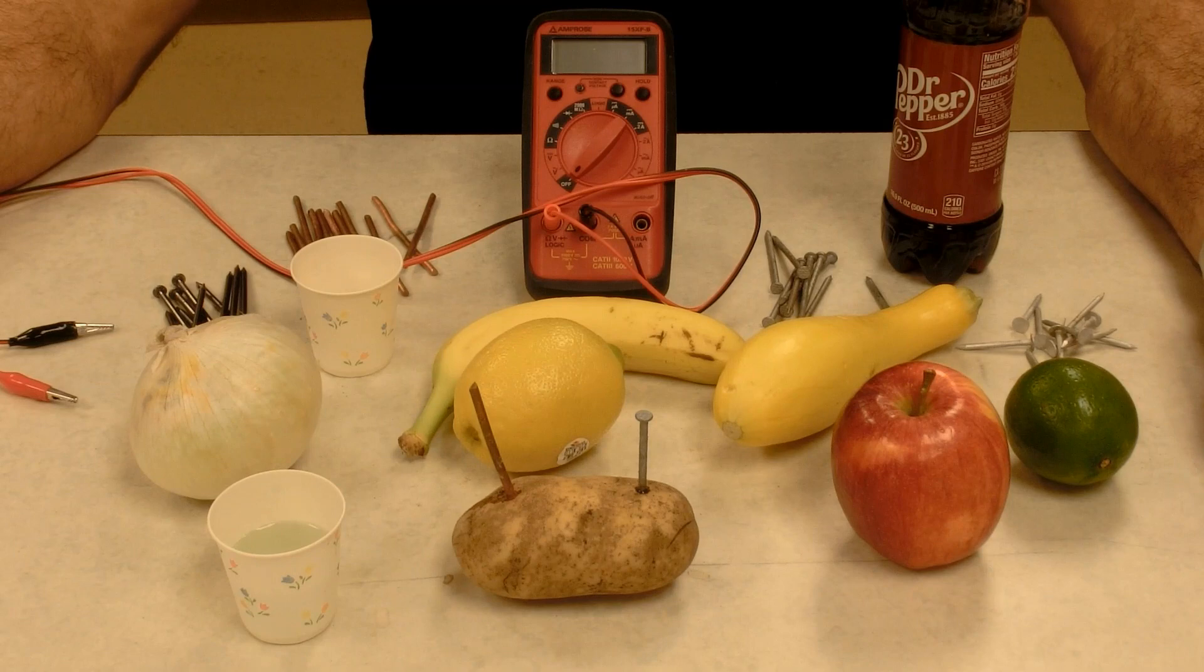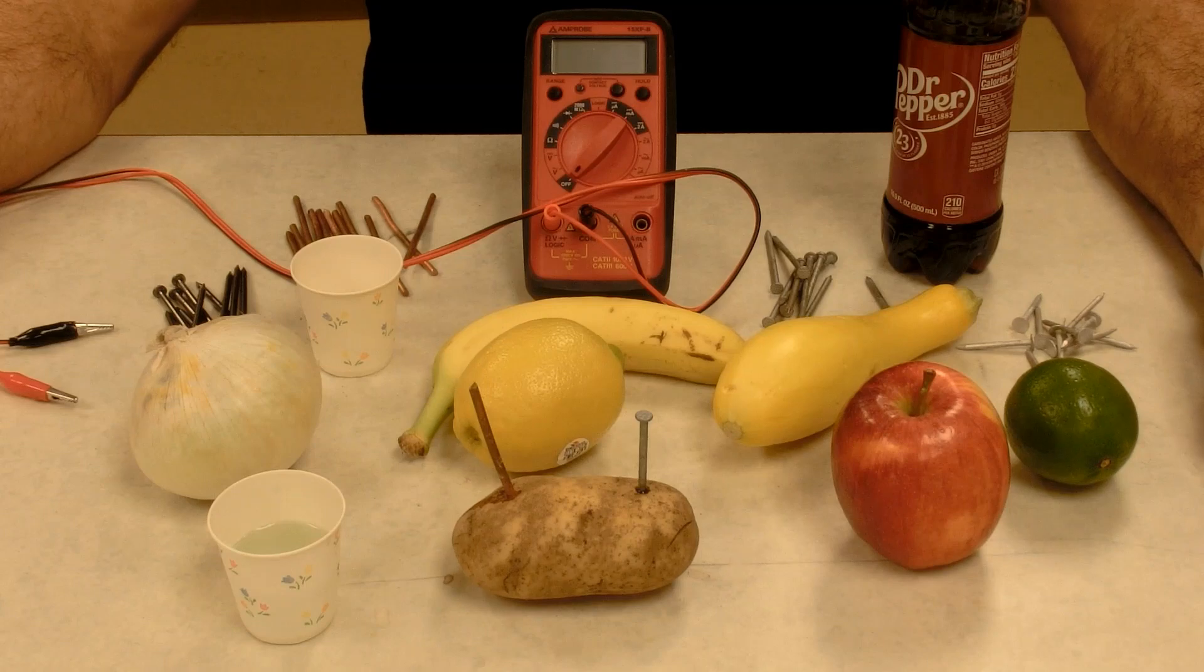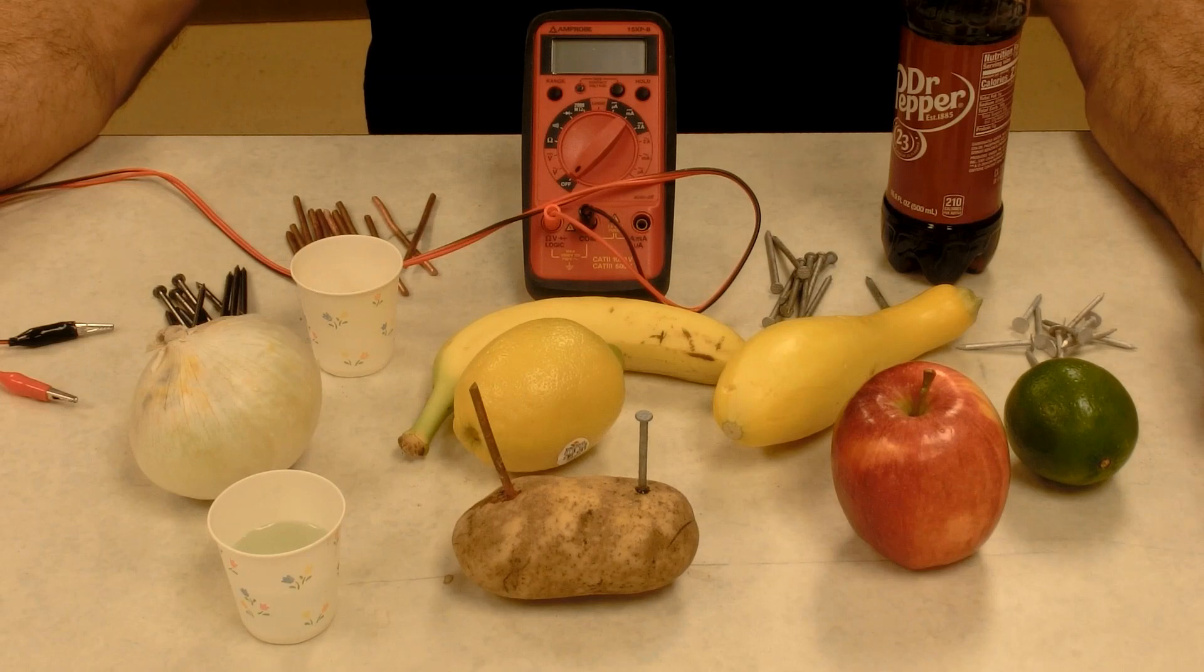So today we have AA, AAA, C, and D. That was all started by Thomas Edison. So a fun activity for students of all ages is to test different materials and see what kind of battery they would make.